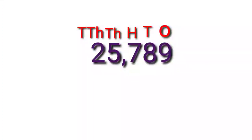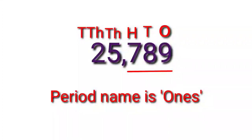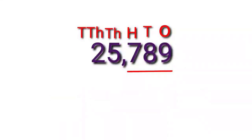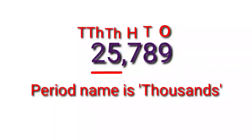Have you noticed the commas placed in numbers? We are actually grouping digits into periods. The first period is a set of three digits in the ones, tens, and hundreds places, and its period name is 'ones.' The other period covers two digits — those in the thousands and ten thousands places — and its period name is 'thousands.'